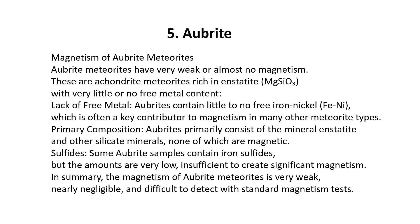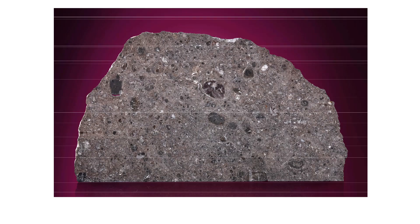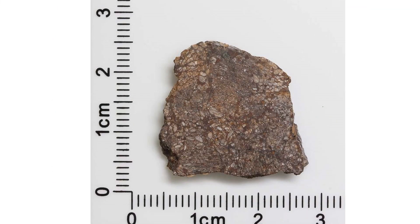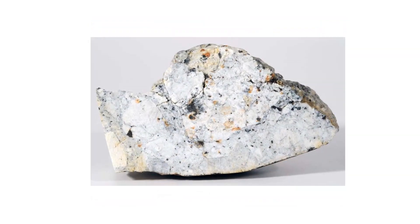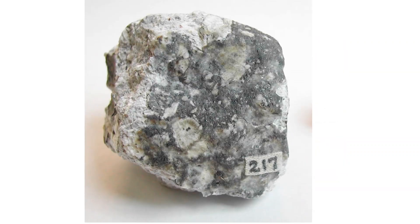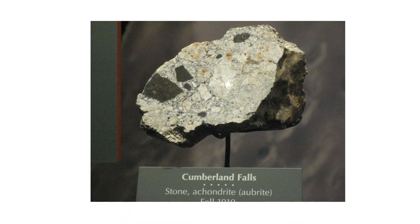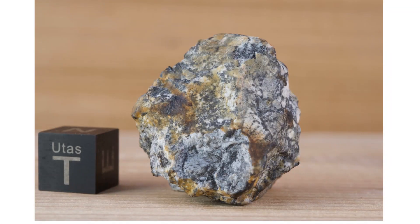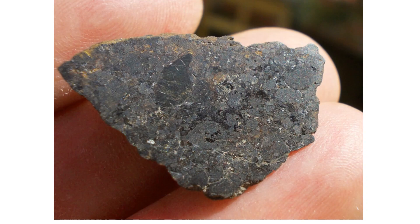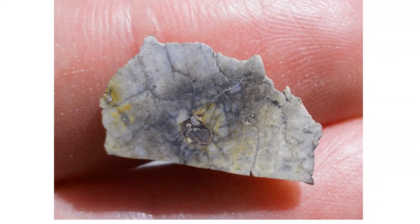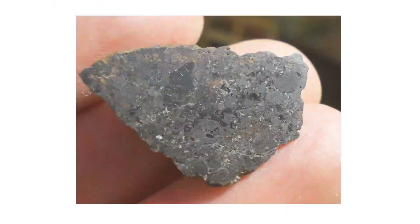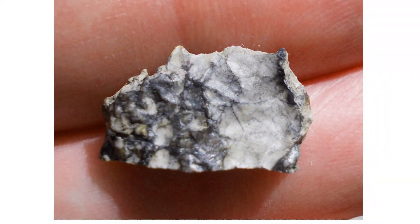Magnetism of Aubrite meteorites: Aubrite meteorites have very weak or almost no magnetism. These are achondrite meteorites rich in enstatite (MgSiO3), with very little or no free metal content. Lack of free metal: Aubrities contain little to no free iron-nickel, which is often a key contributor to magnetism in many other meteorite types. Primary composition: Aubrities primarily consist of enstatite and other silicate minerals, none of which are magnetic. Some Aubrite samples contain iron sulfides, but the amounts are very low, insufficient to create significant magnetism. In summary, the magnetism of Aubrite meteorites is very weak, nearly negligible, and difficult to detect with standard magnetism tests.